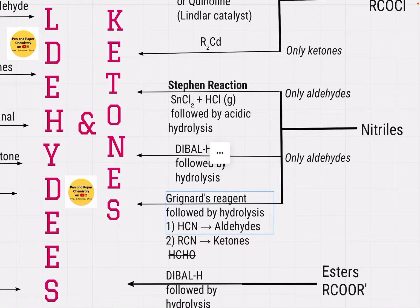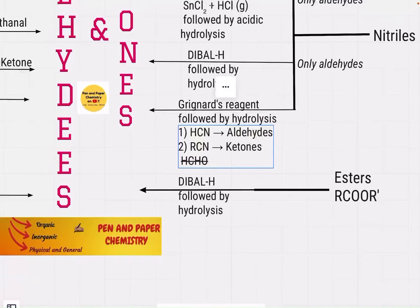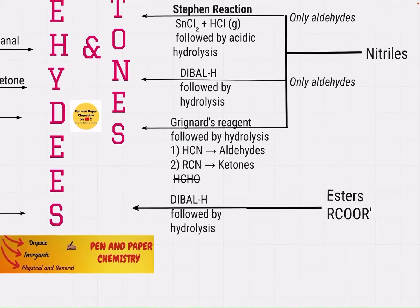There is another method: treating the hydrogen cyanide or alkyl cyanide with Grignard's reagent followed by hydrolysis. By this method we can prepare both aldehydes and ketones, but we cannot prepare methanal (HCHO) — which is why you'll see an HCHO with a strike-through on the flowchart.